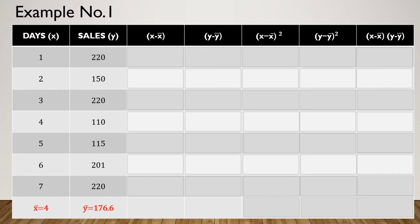The first thing we need to do is find x-bar and y-bar. x-bar is the average of all x values, so we add 1 plus 2 plus 3 plus 4 plus 5 plus 6 plus 7 and divide by 7, giving x-bar equal to 4. Similarly for y-bar, we sum all the y values and divide by 7, giving y-bar equal to 176.6.